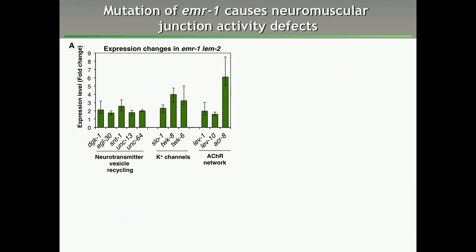Not only do we see an increase in association of Emerin with genes of the nervous system, but we also see changes in expression of many genes when we knock down Emerin and LEM-2 together. Proteins involved in neurotransmitter vesicle recycling, potassium channels, and acetylcholine receptor networks are deregulated upon knockdown of Emerin and LEM-2.